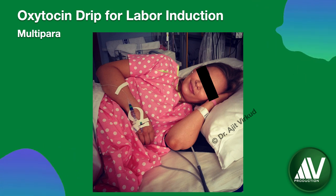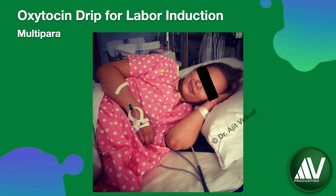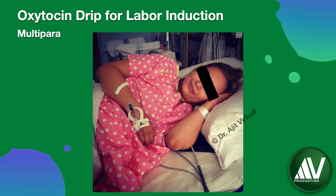Stop the infusion if hyperstimulation occurs — that is, contractions lasting greater than 60 seconds — or tachysystole, defined as more than 4 contractions per 10 minutes.